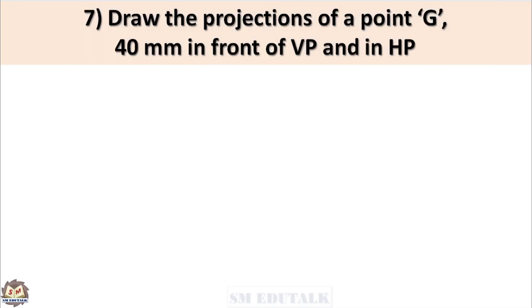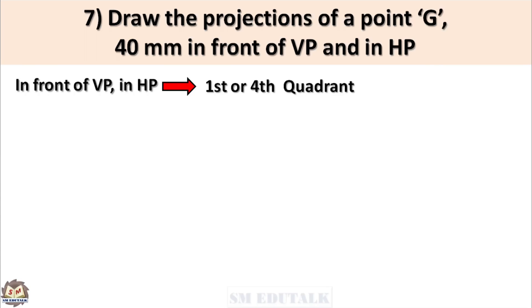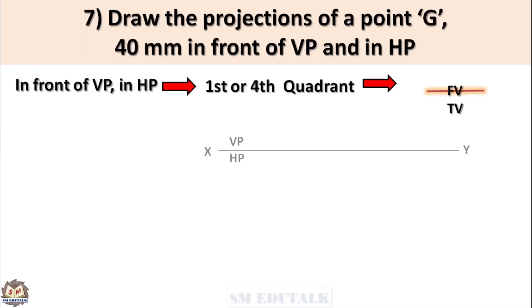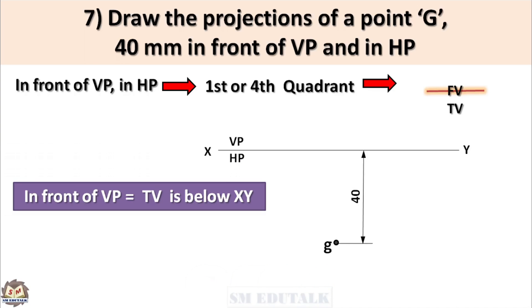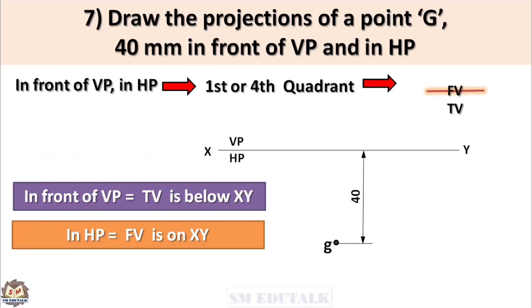Seventh problem: Draw the projections of a point G, 40mm in front of VP and in HP. Given condition: in front of VP, in HP — so point G may be in the first or fourth quadrant. Hence, the top view should come below the XY line and the front view should be on the XY line. Locate the top view G 40mm below the XY line. Draw a projector vertically upward from G until it intersects the XY line — mark that intersecting point as the front view G'.